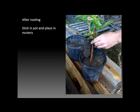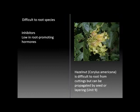After rooting, it's time to pot up your rooted cuttings and place them in a nursery so they can continue to develop. Some species are difficult to root because they have hormone inhibitors or other factors that inhibit formation of adventitious roots. Hazelnut is one example—it's very difficult to root from cuttings. However, there are other vegetative methods: hazelnuts can be grown from seed or increased by harvesting suckers or from layering, which will be demonstrated in Unit 9.